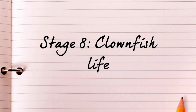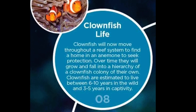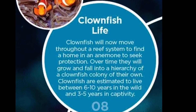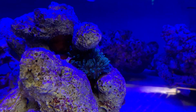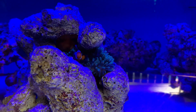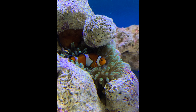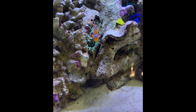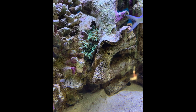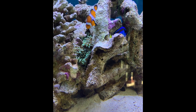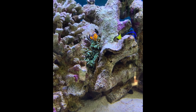The last stage is stage eight, where the clownfish go about their normal lives. They will enter the reef system and find a home in their own anemone. They'll begin to fall into a hierarchy of their own in a beautiful clownfish colony. In captivity, they could live between three to five years, and out in the wild up to 10 years. These guys have a mutual relationship known as symbiosis with the anemone — the clownfish helps the anemone with food, and the anemone provides the clownfish with a little bit of protection from the reef environment.